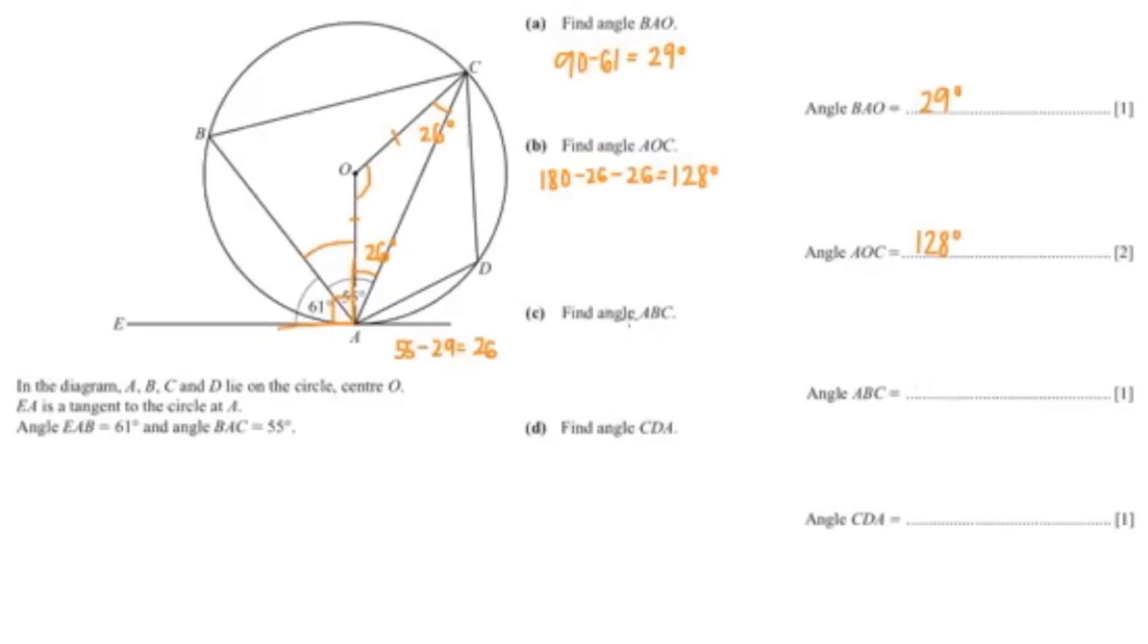Now the next question wants us to find angle ABC, and that is over here. So to find ABC, you would just do 128 divided by 2, which is 64.